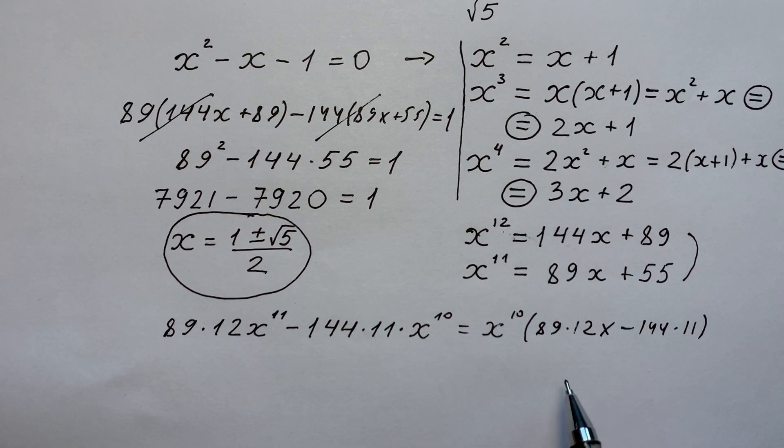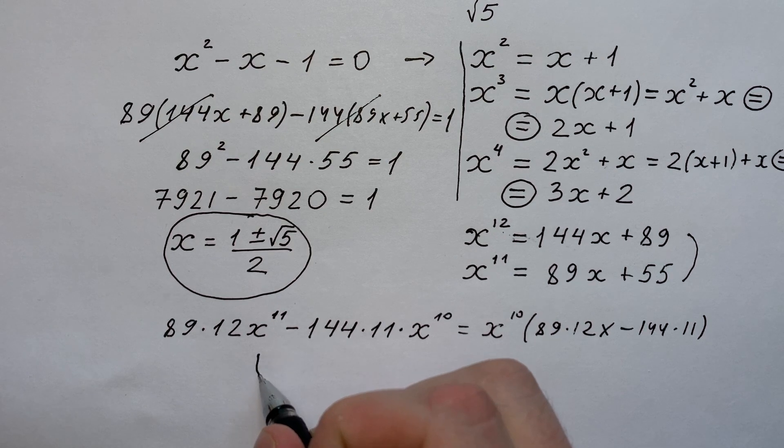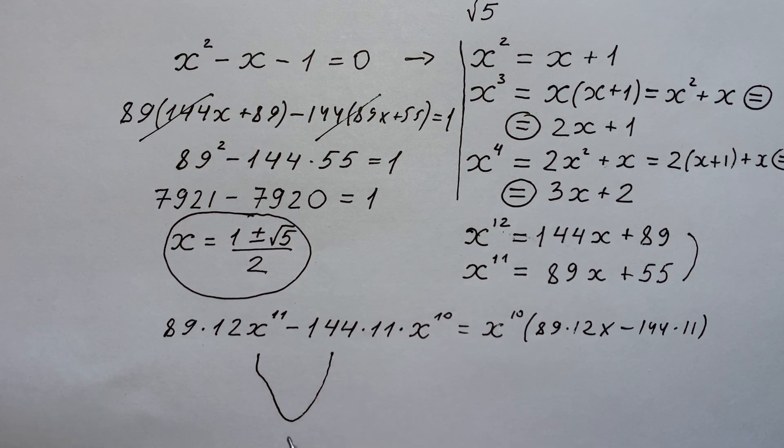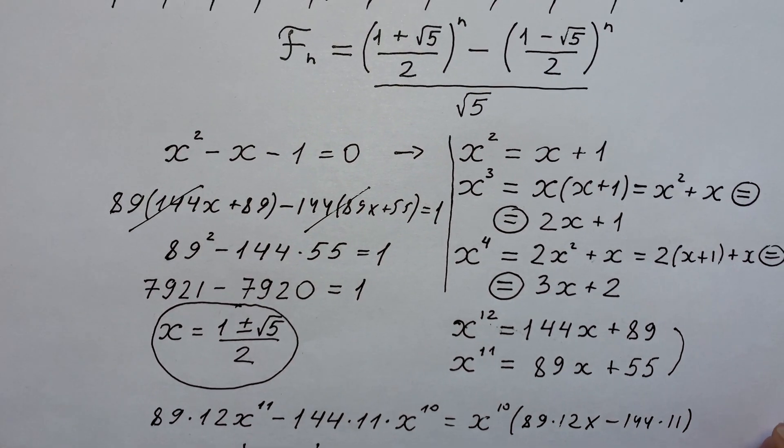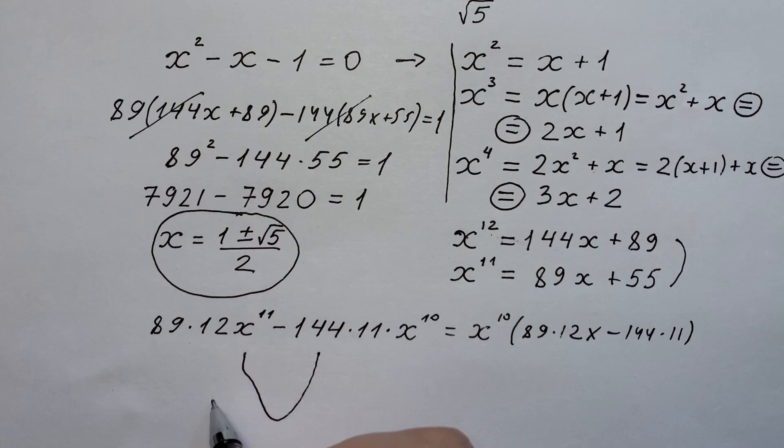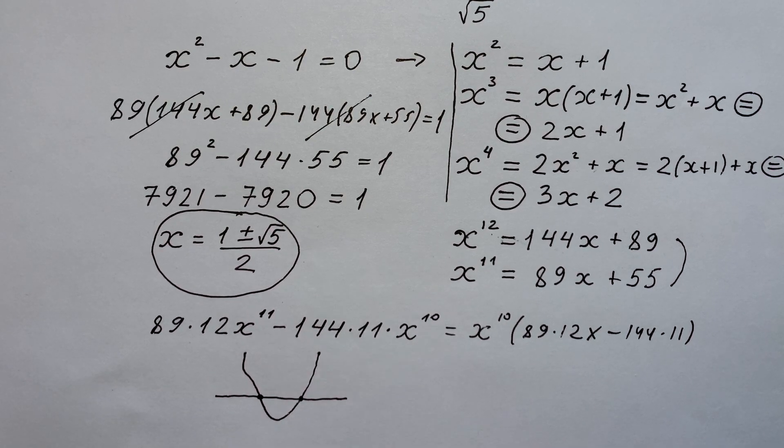We see the derivative changes sign only once. And our function in the left side of the original equation has only one extremum point. And if we have this function on the left side and a constant on the right side, we have at maximum two connection points or two solutions. And our equation cannot have more than two roots. And we have already found them.